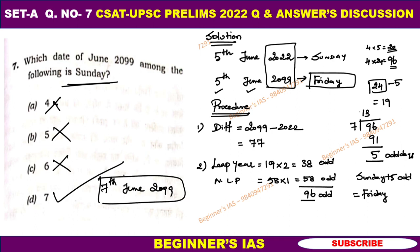Therefore you need to calculate the date, and the date is the 7th. I hope you all are clear. Please try to solve this kind of question. Thank you all, have a good day.